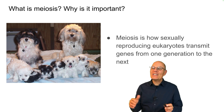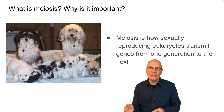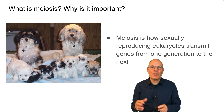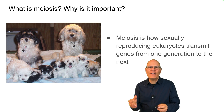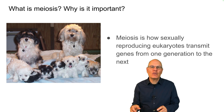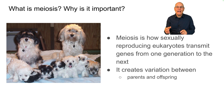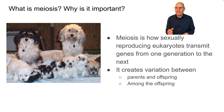Meiosis is how sexually reproducing eukaryotes — that includes animals, plants, fungi, and protists — transmit genes from one generation to the next. It creates variation between parents and their offspring, and creates variation among the offspring.